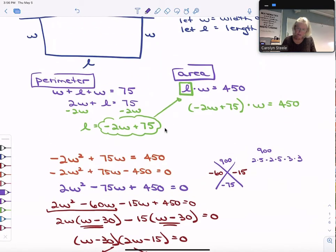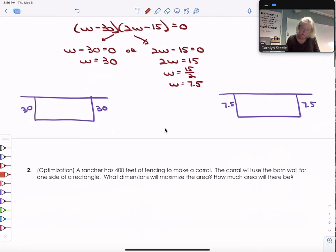All right, so notice I still have a missing piece of what is the length for these. And if I come up here, I see, oh yeah, yeah, yeah, yeah, yeah, I remember. To find the length, it's really another way of thinking about this is 75 minus twice the width. So the length is equal to 75 minus twice the width. So the length is equal to 15. Or over here, the length is equal to 75 minus twice the width. And so the length is equal to 60.